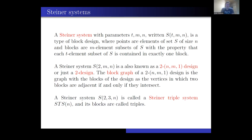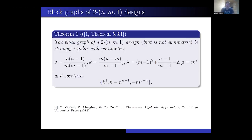A Steiner system with parameters 2, 3, n is called a Steiner triple system and its blocks are called triples. This theorem states that the block graph of a 2-design that is not symmetric is strongly regular, with parameters you can see on the screen, and spectrum k, k minus n, and minus m.